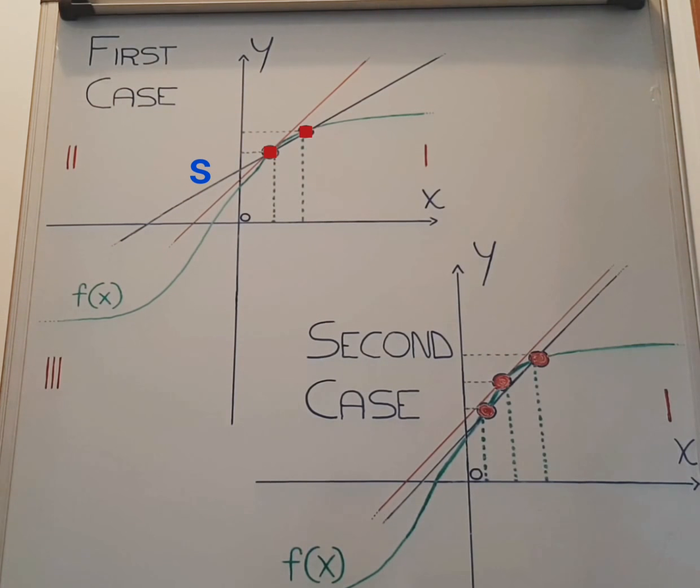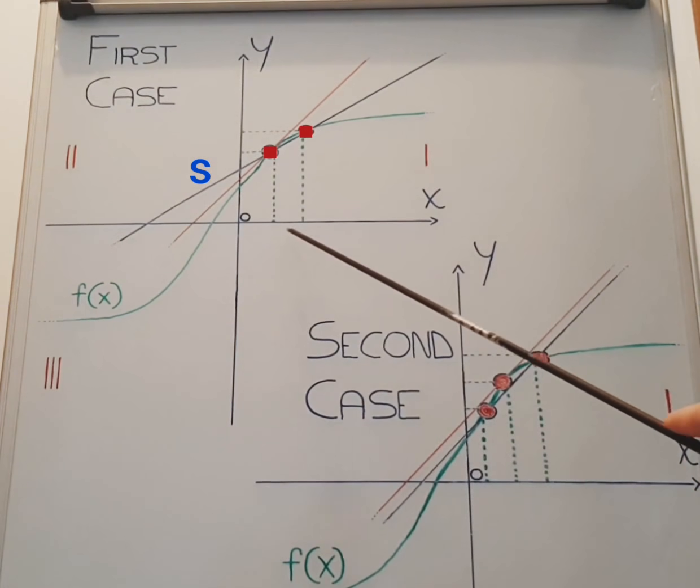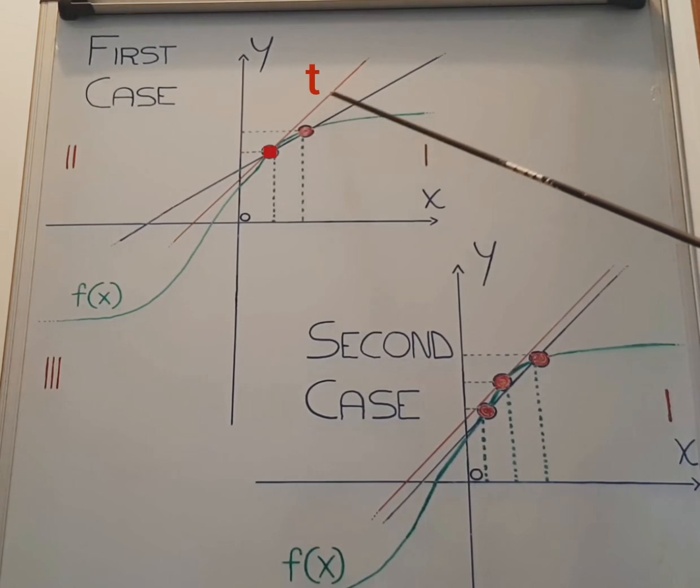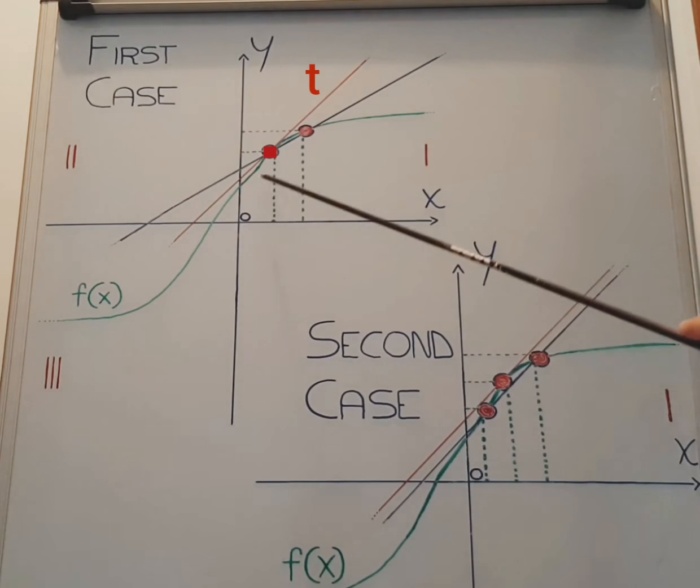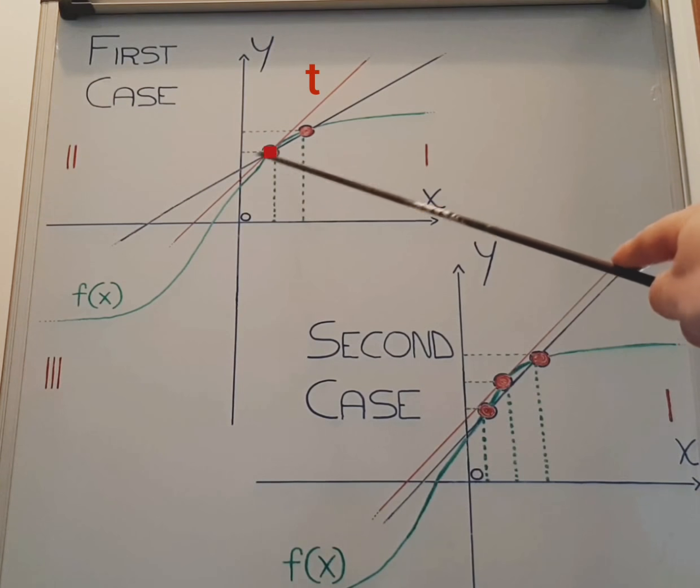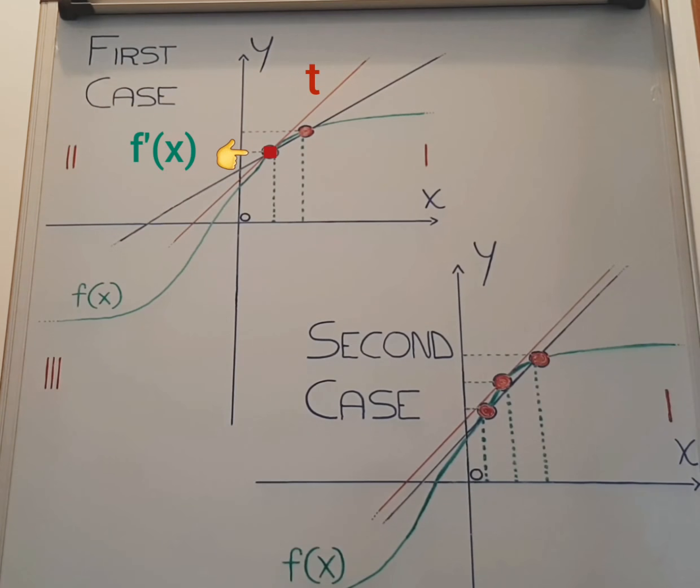In the instant in which h tends infinitesimally to 0, the line becomes tangent to the function at the point x0. The slope of this line at the moment of tangency is defined as the numerical value of the derivative at this point.